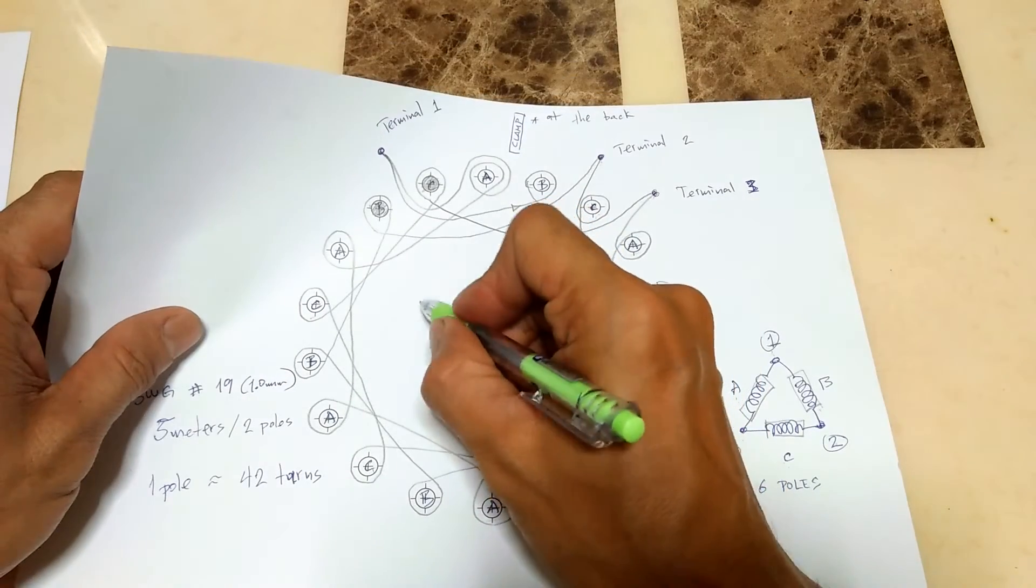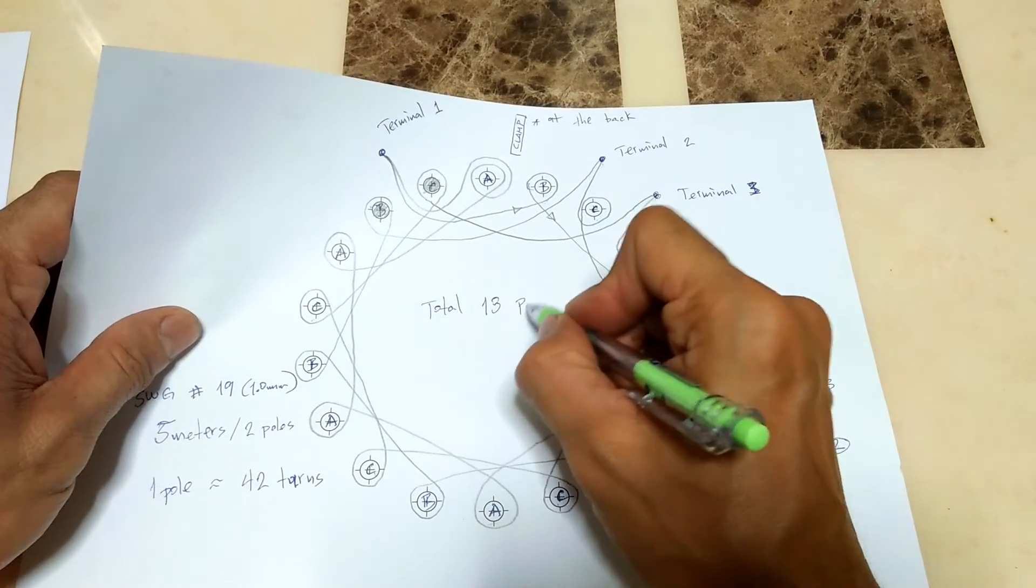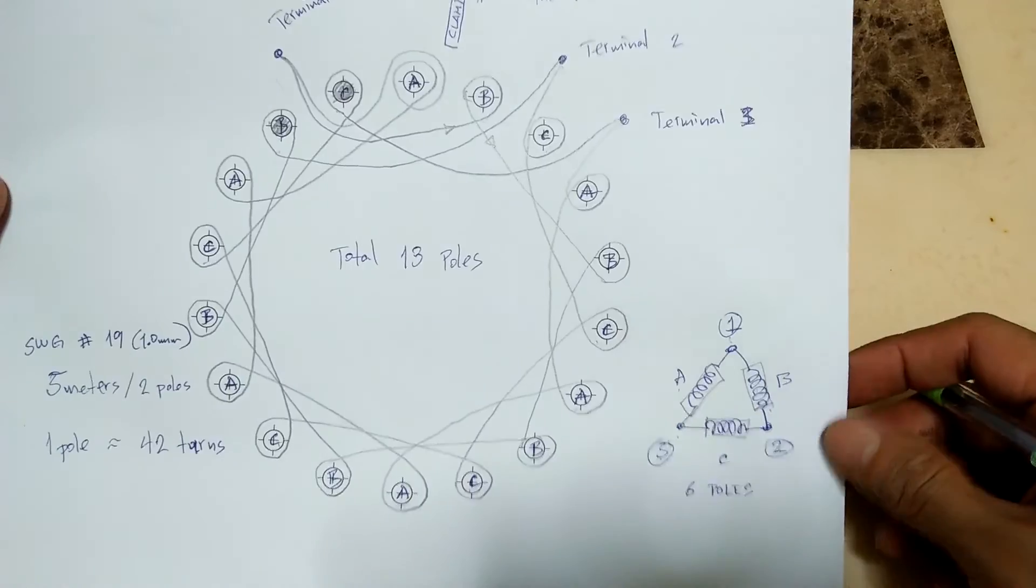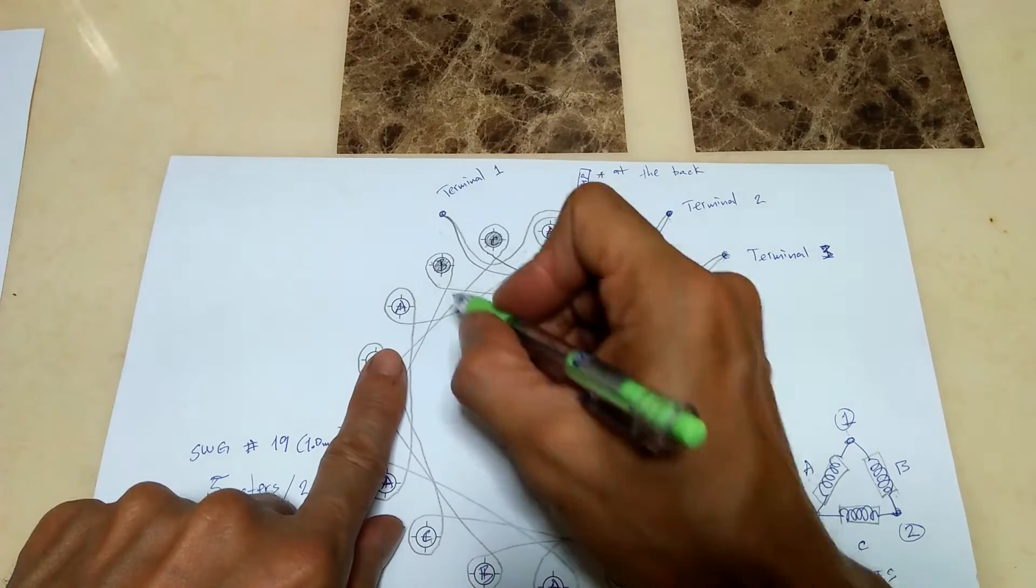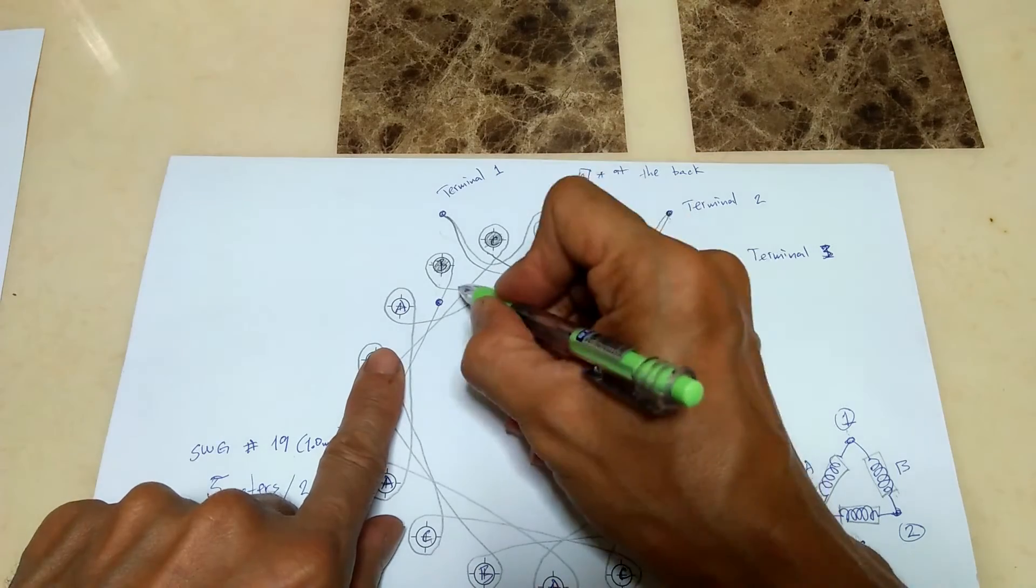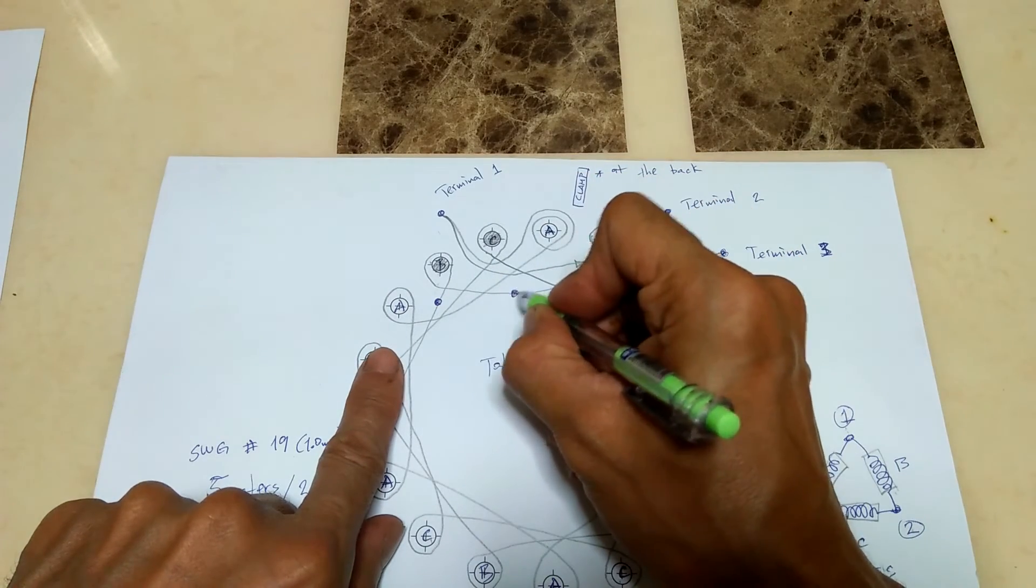Since I only rewind two poles, I will end up with several wire ends that I have to connect to existing windings, unlike the original winding that came from the factory that is made from one continuous length of wire.